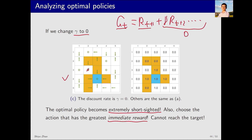For example, starting from a given state, when the agent moves upwards it will hit a wall or enter a forbidden area, resulting in a negative reward. Moving to the right or down also yields a negative reward. Staying still or moving to the left results in a reward of 0. Therefore it will either stay still or move to the left. In our program we randomly choose one of them, and in this case the agent chooses to stay still. Starting from a state adjacent to the target area, the agent will enter it, since moving left yields a positive reward. In summary, when gamma equals 0, the optimal policy becomes extremely short-sighted, and starting from many states it simply cannot reach the target area.